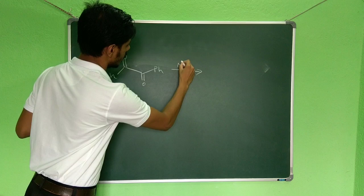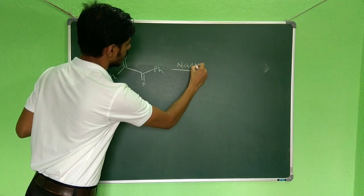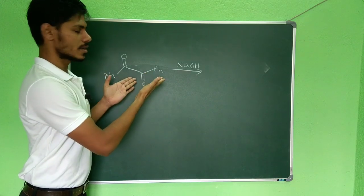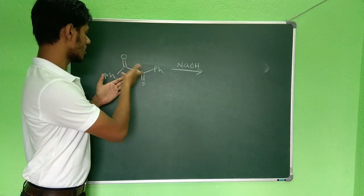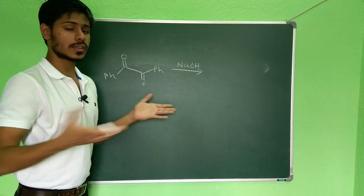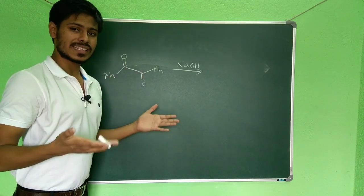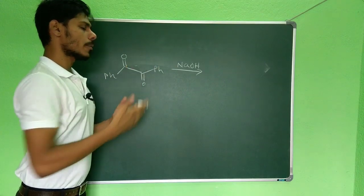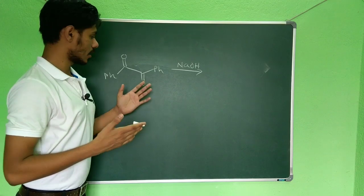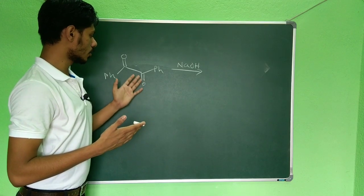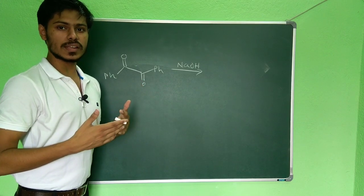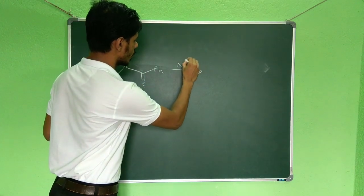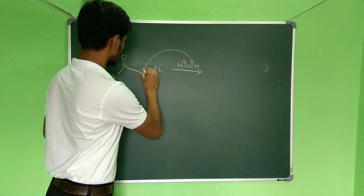With NaOH given, there is no electrophilic center other than these two carbonyl groups. These two carbonyl groups are similar because of their symmetric environment, so sodium hydroxide can attack either one. The reactivity of these two carbonyl groups is mutually increased by the electronic effect of one another. If sodium hydroxide attacks one carbonyl group...